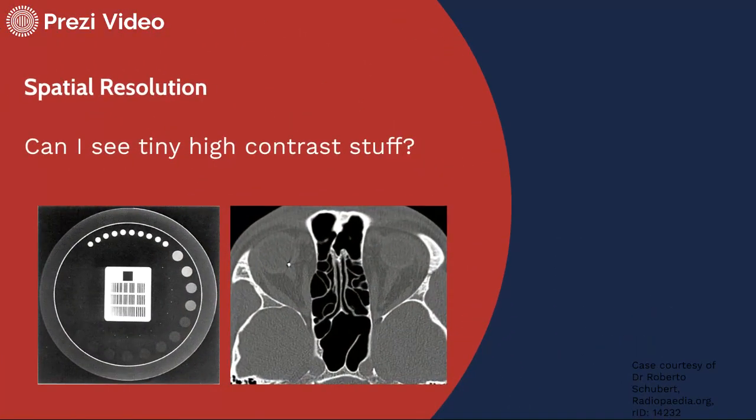Spatial resolution is just asking the question, can I see tiny high contrast stuff? Here's an example from CT where we might measure it using the CT phantom looking at the line pairs at the center. But then here is a CT scan of facial bones, and we're looking at this little tiny metal sliver at the center. Can we see that little tiny high contrast metal sliver? We know it's high contrast because it has a high atomic Z number in comparison to the soft tissue structure that it's embedded in.